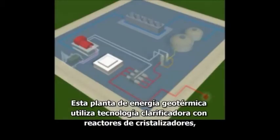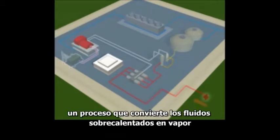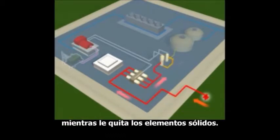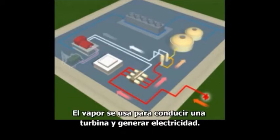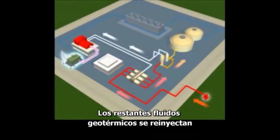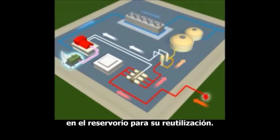This geothermal power plant uses crystallizer reactor clarifier technology, a process that turns the geothermal superheated fluid into steam while removing solids from it. The steam is used to drive a turbine and generate electricity. All remaining geothermal fluids are injected back into the reservoir for reuse.